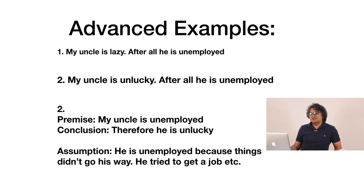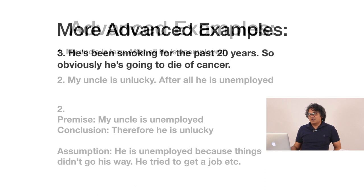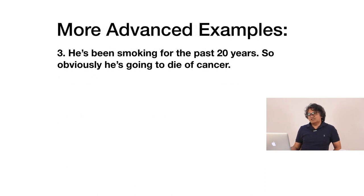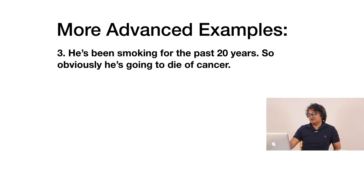The assumption of the second statement is that he is unemployed because things didn't go his way — he tried to get a job, did whatever he could, but things just didn't work out. He's unlucky. So same premise, different conclusions. Now let's look at a still more advanced example: 'He's been smoking for the past 20 years, so obviously he is going to die of cancer.' The first step is to put this into the form of an argument.